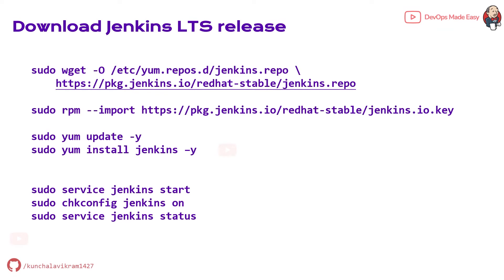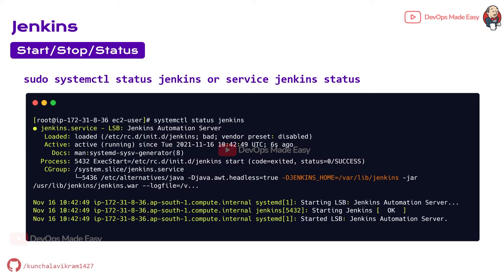We can install Jenkins directly from the official website by adding the Jenkins repo and the Jenkins key. After both are imported, we can just run 'yum install jenkins -y' to install Jenkins. Using the systemctl service utility, you can either start or stop the Jenkins instance. To check whether Jenkins is up and running, you can use 'systemctl status jenkins' or 'service jenkins status' to see information about the Jenkins status.